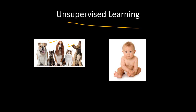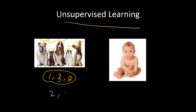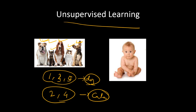The baby could say that this picture, this picture, and this picture look similar. I don't know what they are, but the first, third, and fifth ones are similar, so maybe they are of one category. And then the second and fourth also look similar because the height is different. So maybe the second and fourth animals are of the same category. The baby will say the first, third, and fifth animals in the picture are of one category, and the second and fourth animals are of another category.